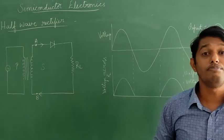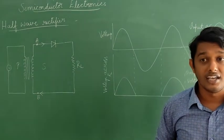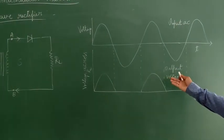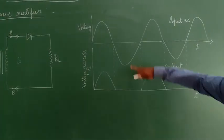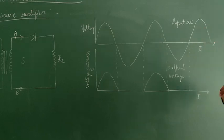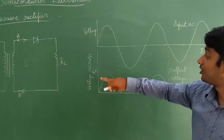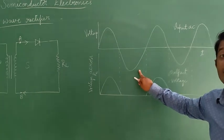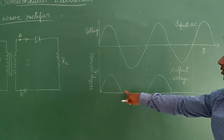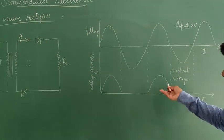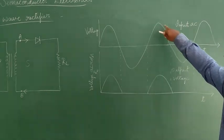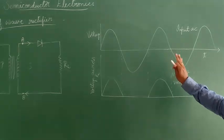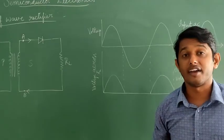The graph of input AC and output DC is as shown in this figure. This is the AC input voltage. During the positive half cycle, the output is obtained. During the negative half cycle, since the diode is reverse biased, we do not get any output. This is how the half-wave rectifier works.